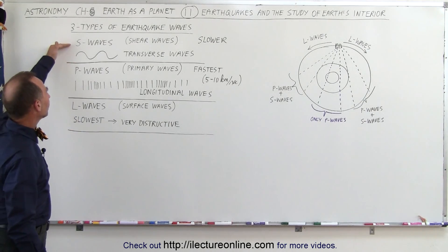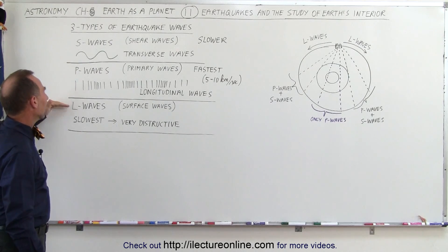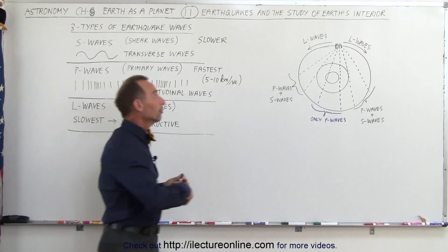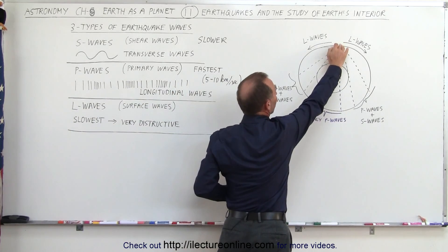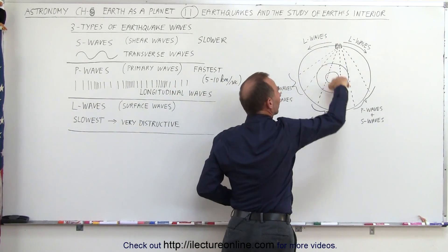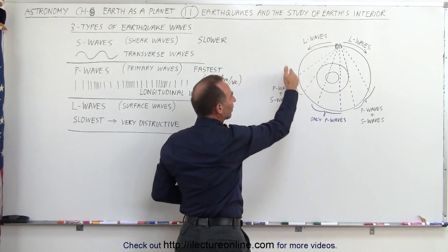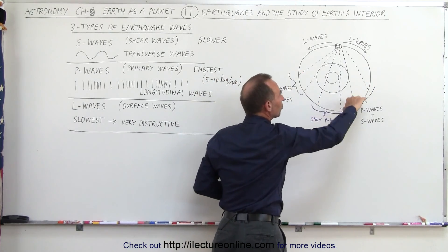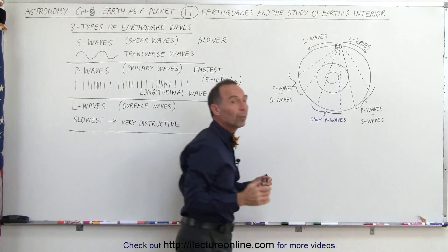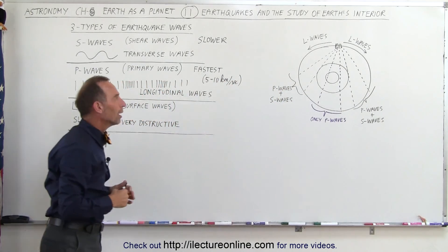We have what we call S waves, P waves, and L waves. The S waves and the P waves tend to travel through the Earth, so they start at some site where an earthquake occurs and they travel through the Earth in all different directions. Stations along the Earth in all different places will typically catch those earthquake waves and record them when they arrive.